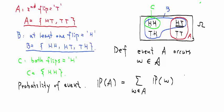And this sum of probabilities is the probability that event A occurs. In this example, the probability of event A equals one quarter for head tail plus another quarter for tail tail, which equals two quarters or one half. That's an example of the probability of an event.